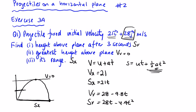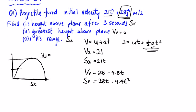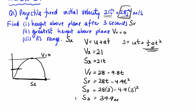The height after three seconds: s_y(3) = 28(3) − 4.9(3²). Using a calculator, that gives 39.9 meters. That's part 1.